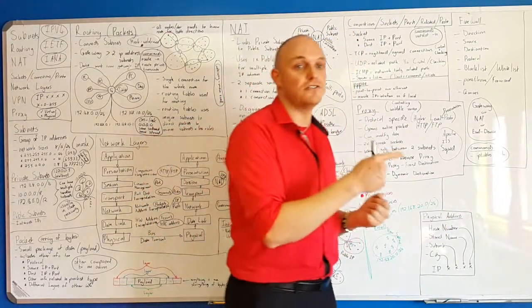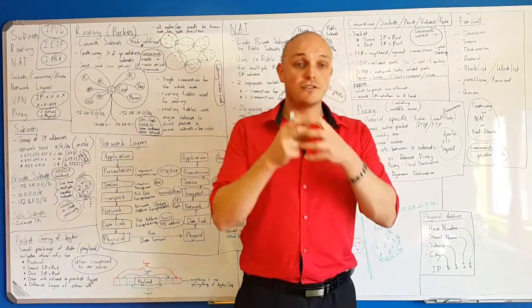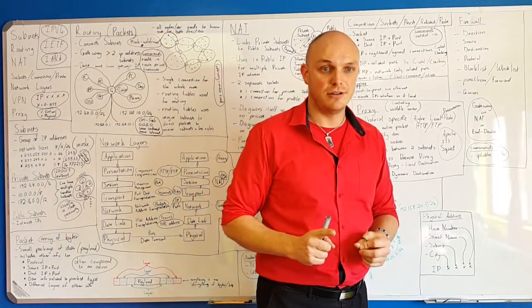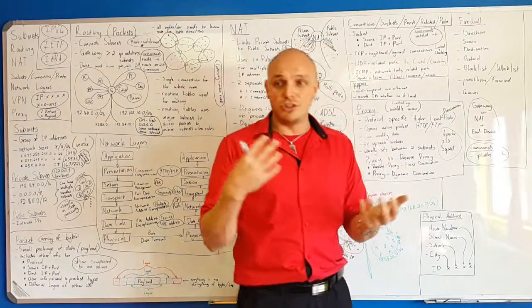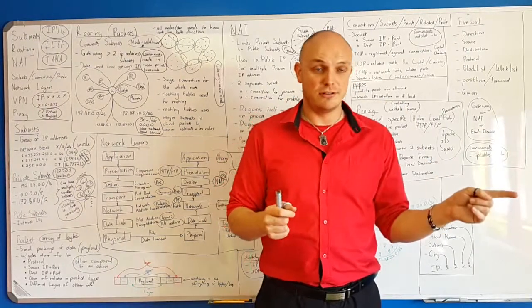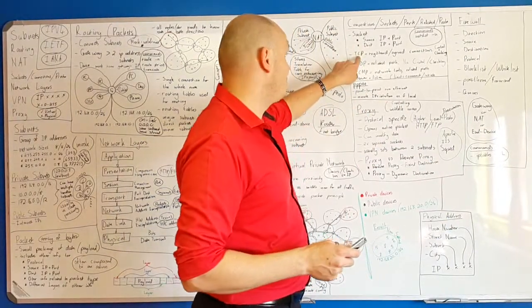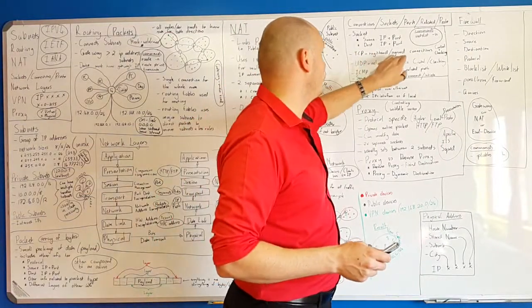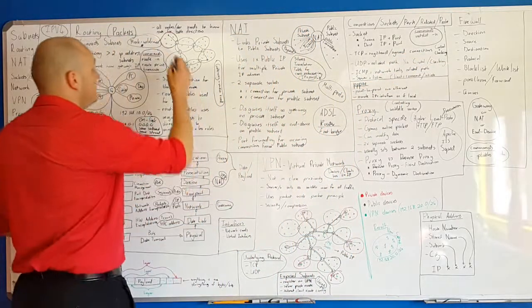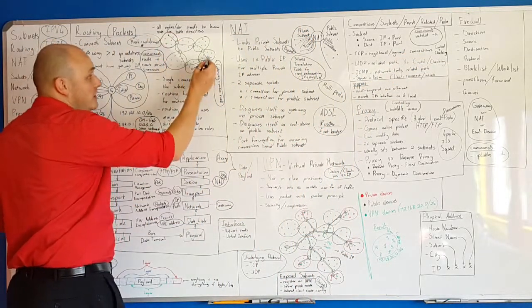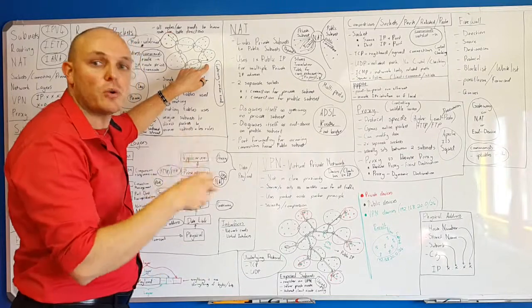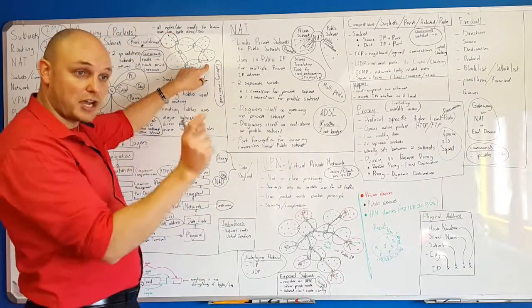A client connects or initiates — that's the thing that starts the socket. The socket always starts from the client to the server. That's always how it begins, so if you set up firewalls and routing, you always need to take that into account. If you're using TCP/IP, it's a registered or agreed connection — very controlled. TCP will save a connect packet — basically a request for connection — saying 'I want to connect to this IP and this port.'